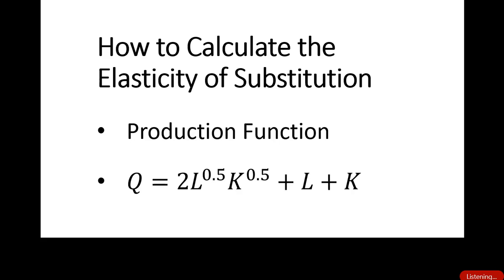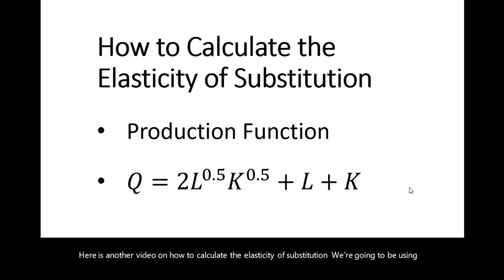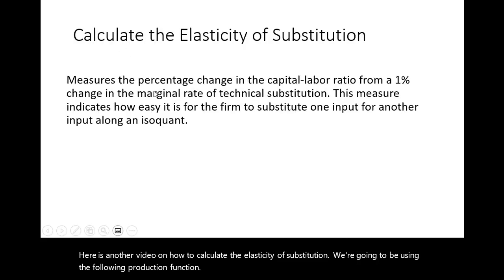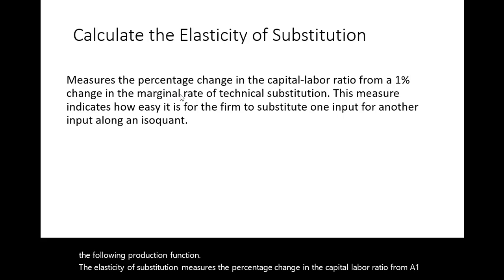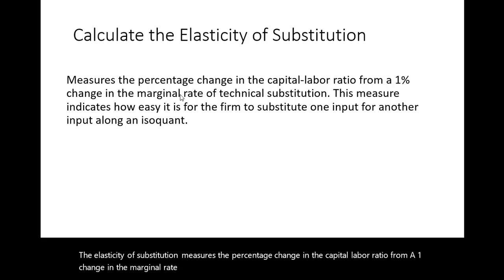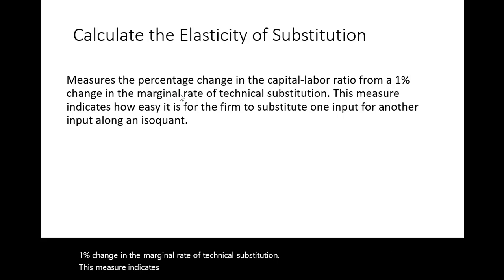Here is another video on how to calculate the elasticity of substitution. We're going to be using the following production function. The elasticity of substitution measures the percentage change in the capital labor ratio from a 1% change in the marginal rate of technical substitution. This measure indicates how easy it is for the firm to substitute one input for another input along an isoquant.